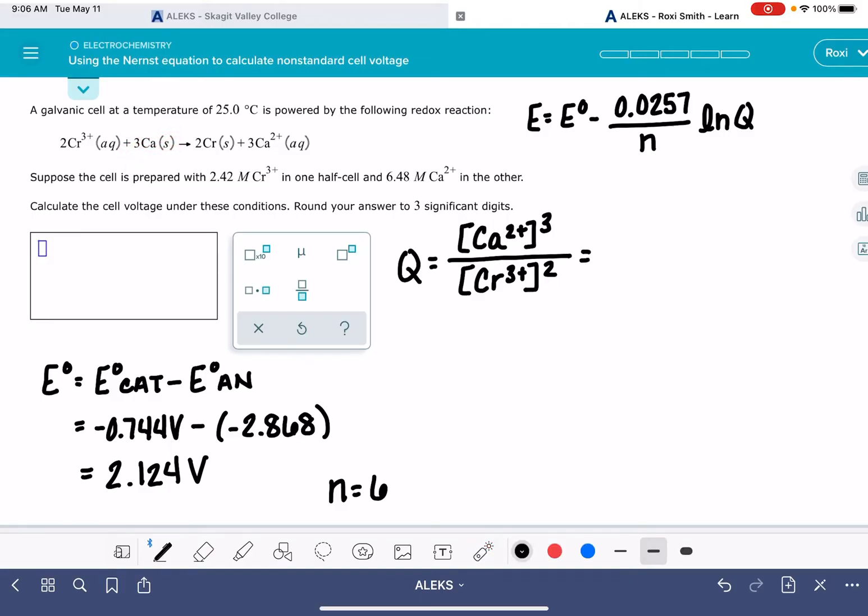The value of the concentrations of the calcium and the chromium are given to us in the problem. The value of the calcium concentration is 6.48, and that needs to be cubed. The value of the chromium concentration is 2.42, and that needs to be squared. So let's go ahead and figure out what this is. 6.48 cubed divided by 2.42 squared is 46.5.